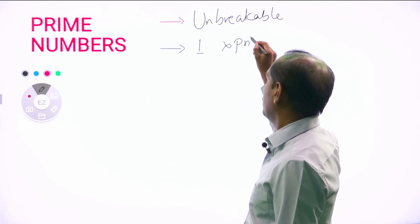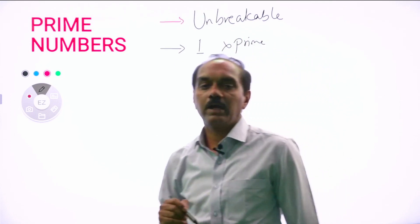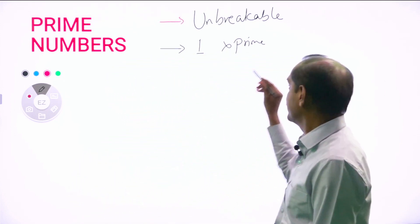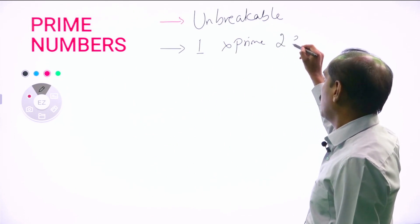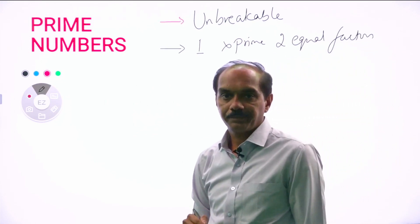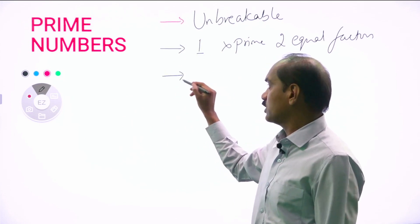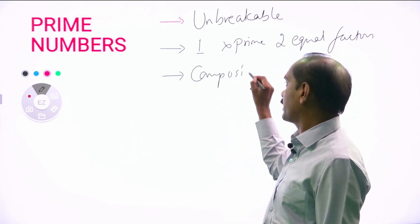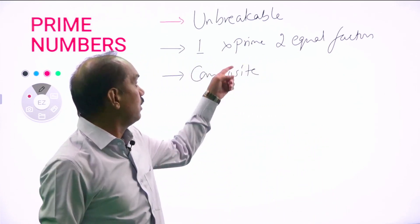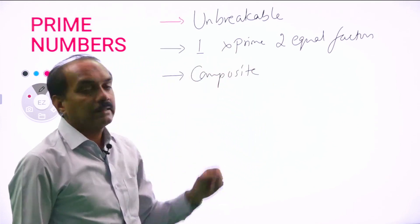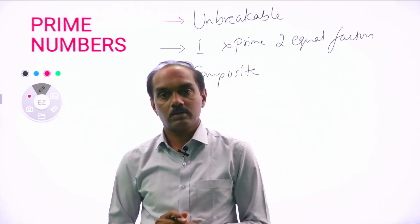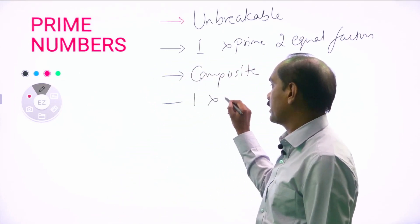Point number two on prime numbers: one is not a prime number, because it has two equal factors. The opposite word of prime numbers is composite numbers — breakable vs unbreakable. One is neither prime nor composite. This is the point to be noted.